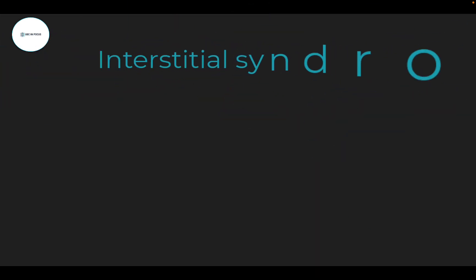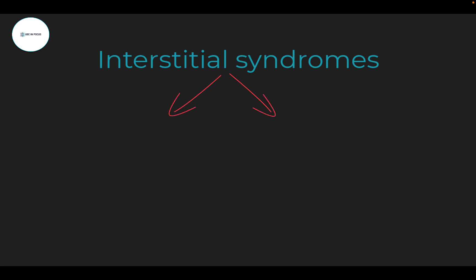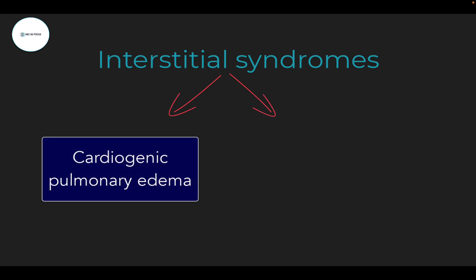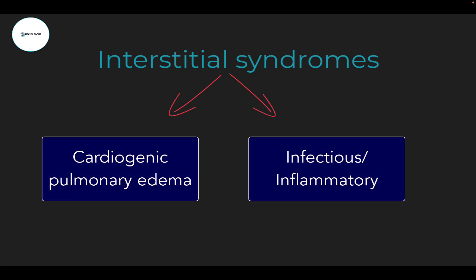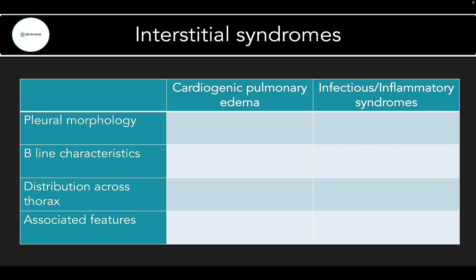Broadly speaking, we can divide our interstitial syndromes into two buckets: cardiogenic pulmonary edema versus infectious or inflammatory etiologies. Within the infectious/inflammatory bucket, clinical history and other parameters will be most helpful in teasing out exactly what's going on. So how do we distinguish between these two groups? There are four main things we can look at, which we'll go through in turn.